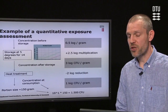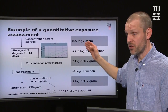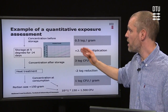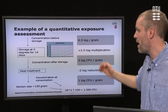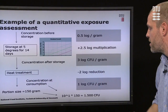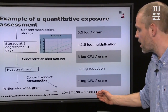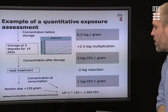In the quantitative exposure assessment we have the same pathway, but now we express the concentration in numbers. We assume a concentration before storage of 0.5 log per gram. We use predictive modeling to figure out what happens during storage at 5 degrees for 14 days, and according to the predictive model we have plus 2.5 log multiplication, meaning we have 3 log CFUs after storage. Then we apply heat treatment of minus 2 logs, and the product ends up with 1 log CFU per gram. If we assume a portion size of 150 grams, we can calculate the total number of CFUs in the serving, which in this case will be 1500 CFUs.